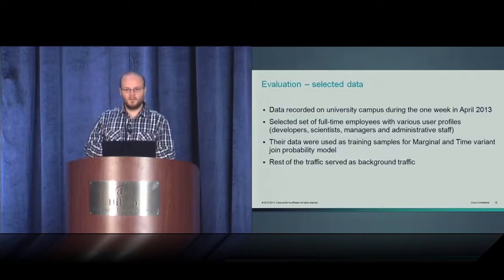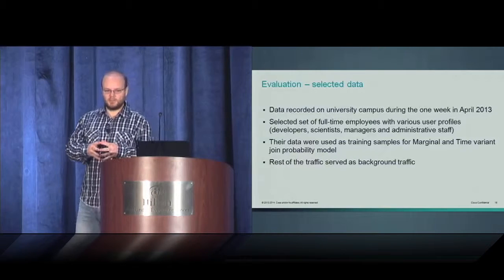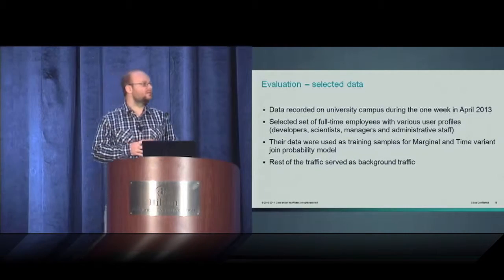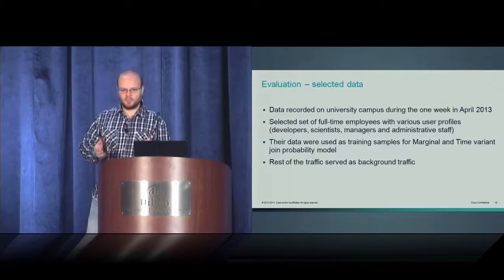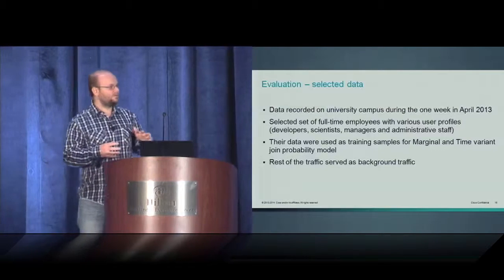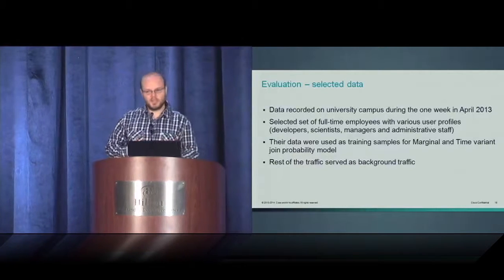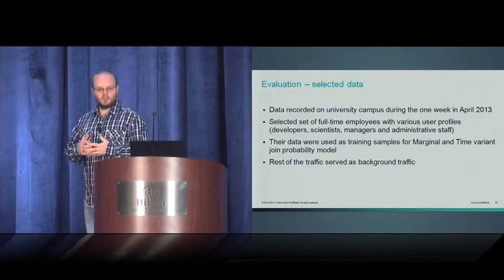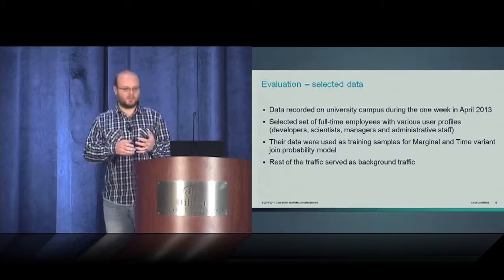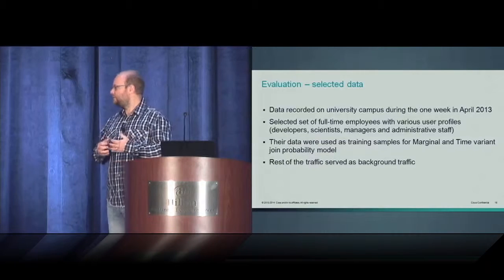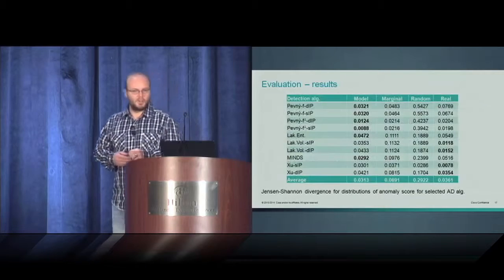Here are the data. We have used data that were recorded on university campus during one week in April 2013. We have selected a set of full-time employees with different user profiles: developers, administrative staff, and so on. I think it was about 70 people. And we've extracted their data from the background and use this data as training samples for marginal and time-variant joint probability model. The rest of the traffic was used as background traffic for the anomaly detection methods.